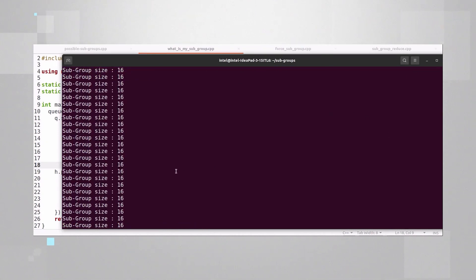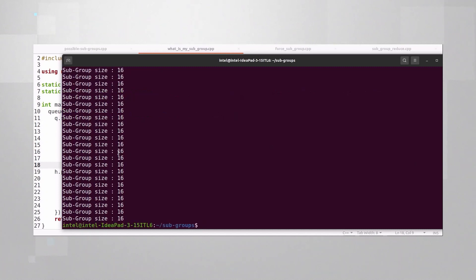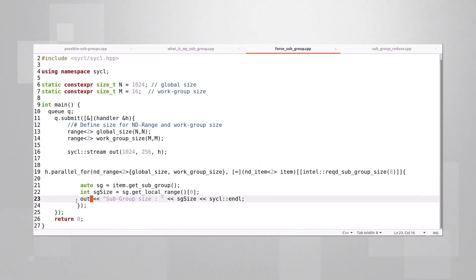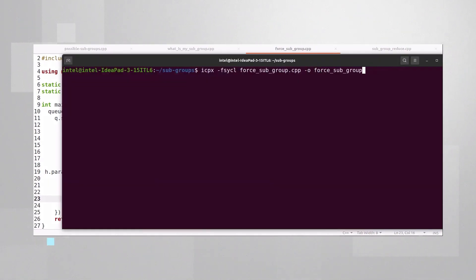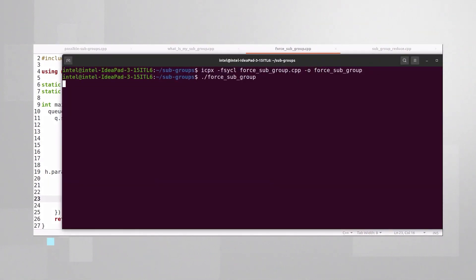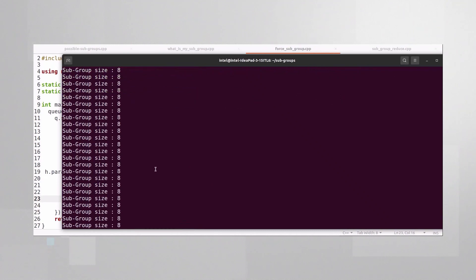There is a way to force the size. So I have here the global size, the workgroup size and I'm forcing the subgroup size to be 8. This is hardware and vendor specific, so you can see here the Intel. And I'm going to print it out. Compile and run. And yes, subgroup size is 8.